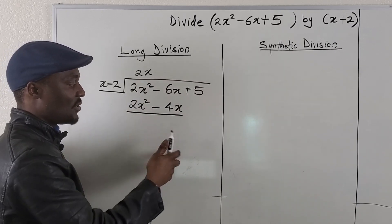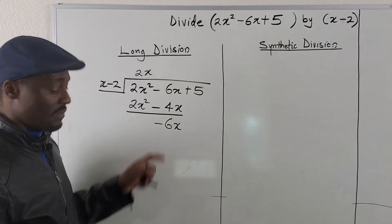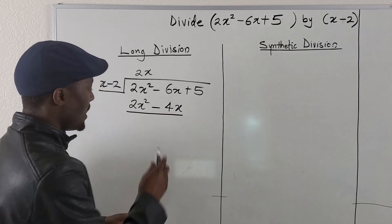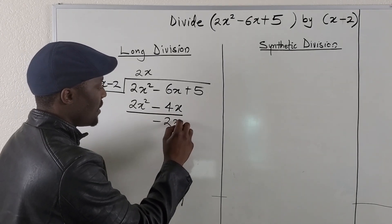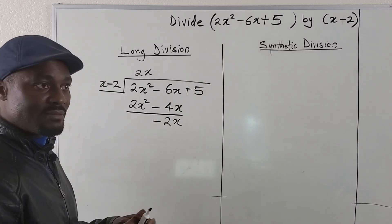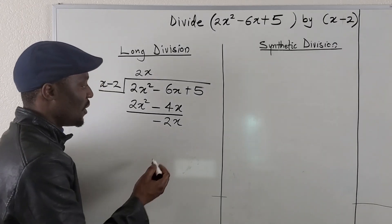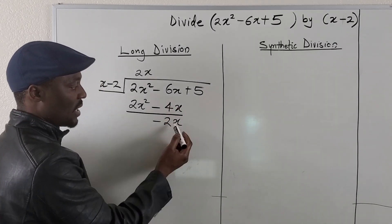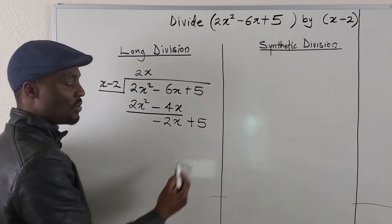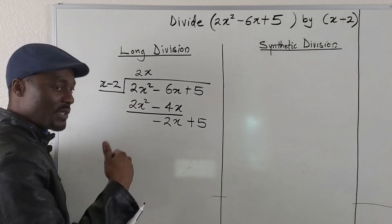Then, if you subtract this from this, you're going to have negative 2x. If you don't know why this is negative 2x, you might want to fix your knowledge of integers. So once you've gotten this, you want to drop this — it becomes plus 5. So you have a new polynomial; this is now a linear polynomial.